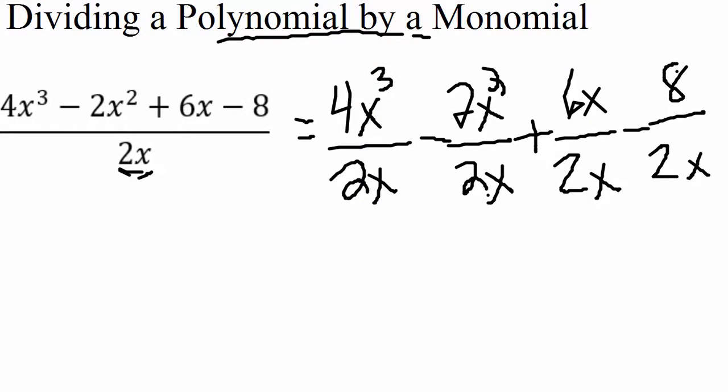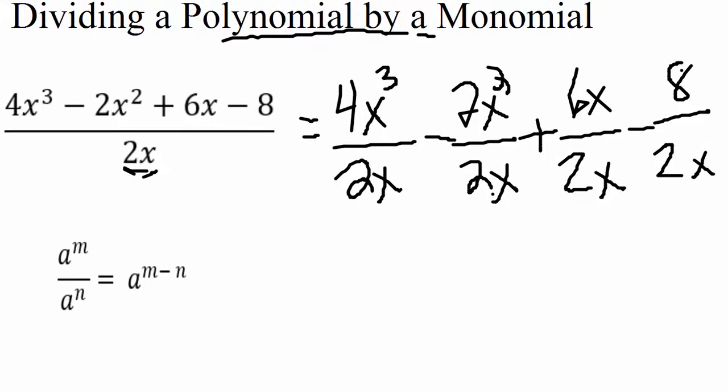Now what we need to know in order to do this problem is the quotient rule. And the quotient rule says this. It says that when we are dividing like bases here, so again like bases just mean that they have the same letter, an x over an x, or a y over a y.